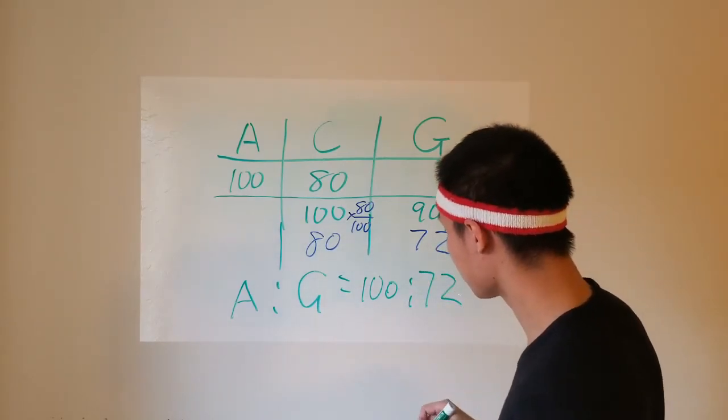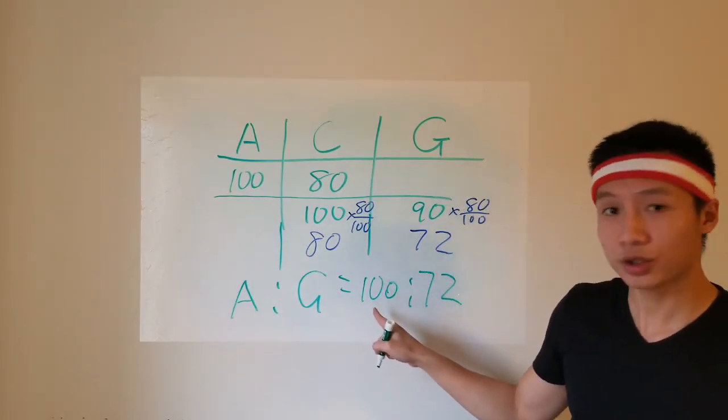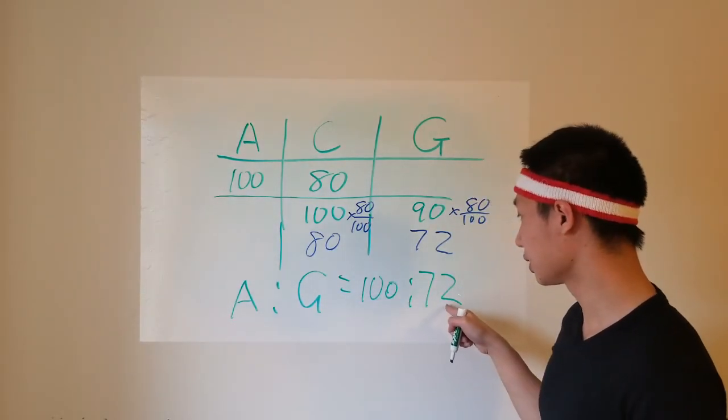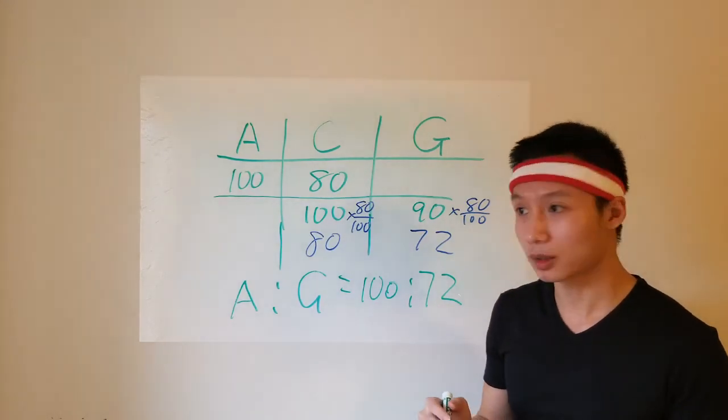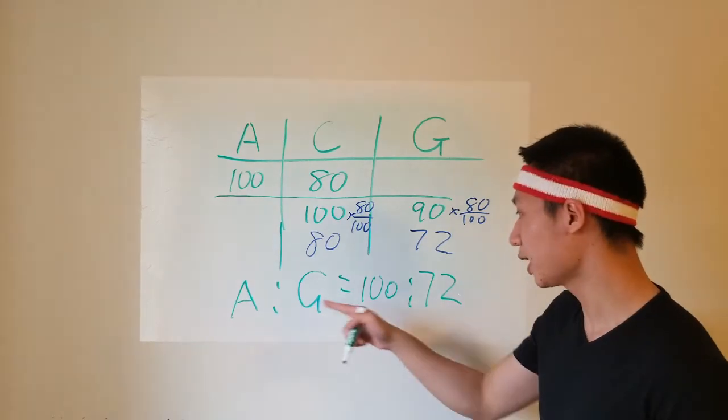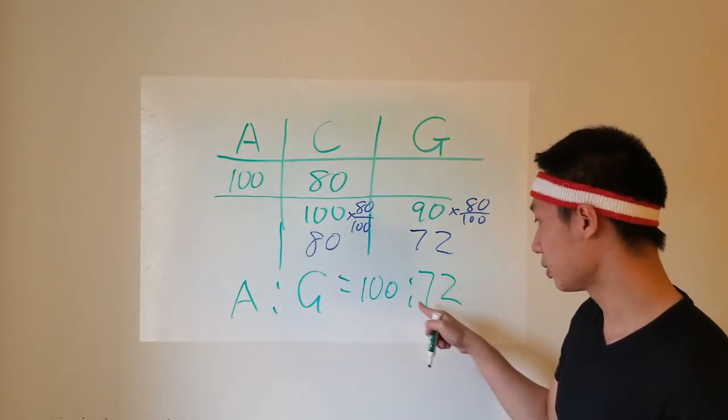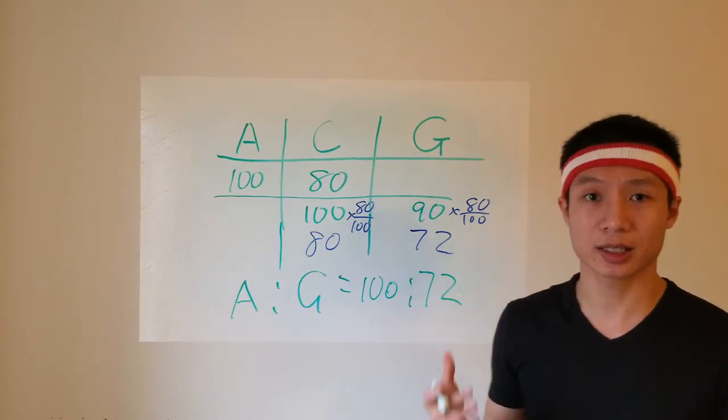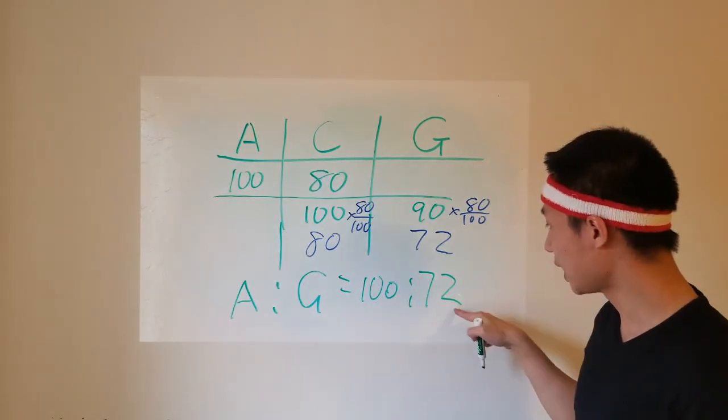So that means when A travels 100 meters, during the same amount of time, G would have traveled only 72 meters. And 100 meters is exactly what it takes to go from start to finish. So when A crosses the finish line, G has only traveled 72 meters, which means that G is 100 minus 72, or 28 meters behind.